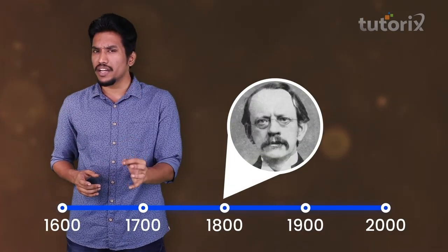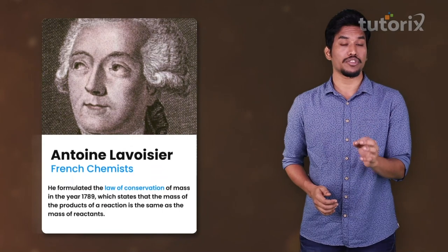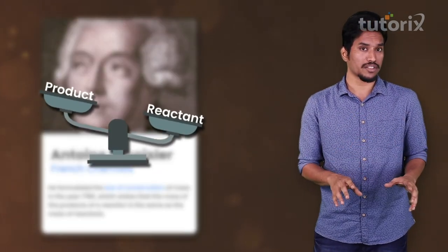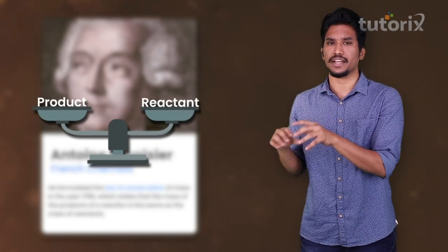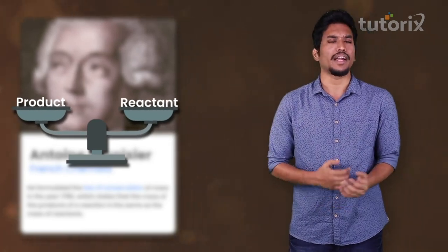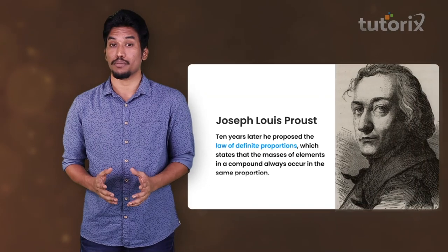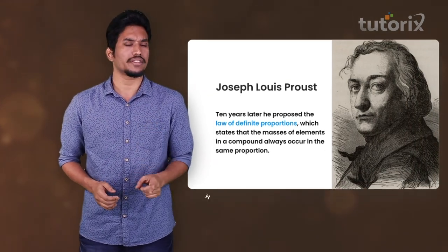In 1789, Antoine Lavoisier proposed the law of conservation of mass, which states that the mass of the products in a reaction is equal to the mass of the reactants. Ten years later, Joseph Louis Proust proposed the law of definite proportions, which states that the masses of the elements in a compound always occur in the same proportion.